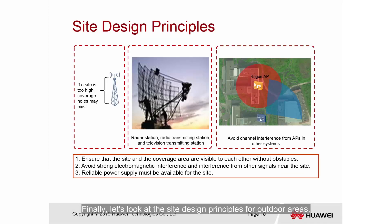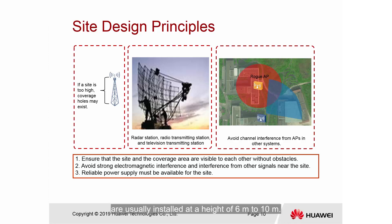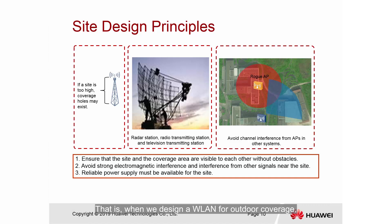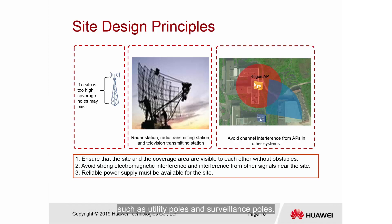Finally, let's look at the site design principles for outdoor areas. First, APs cannot be installed at a high position; otherwise, coverage holes are likely to occur. Therefore, outdoor omnidirectional and directional antennas are usually installed at a height of 6 to 10 meters. Also, ensure there are no obstacles between the site and the coverage area — outdoor WLAN design does not consider signals passing through obstacles. Second, avoid strong electromagnetic interference around the site. Third, reliable power supply is required. In outdoor projects, APs are usually installed on specific positions with stable power supply, such as utility poles and surveillance poles.